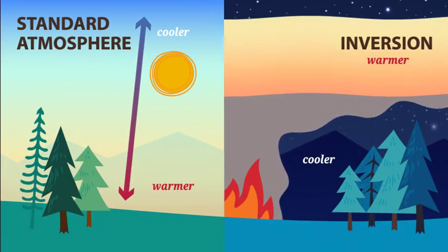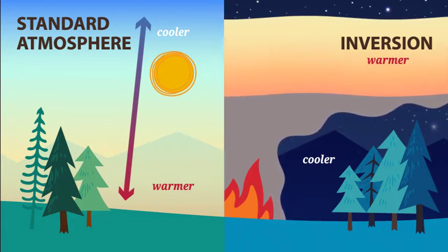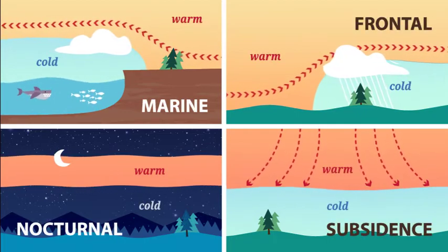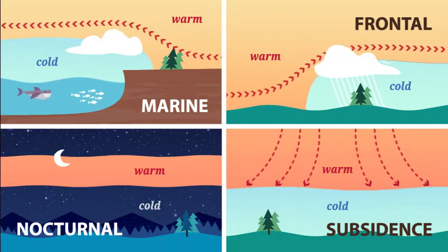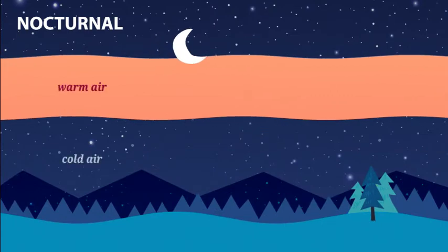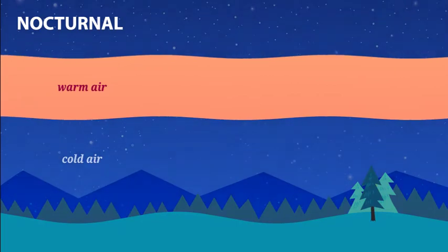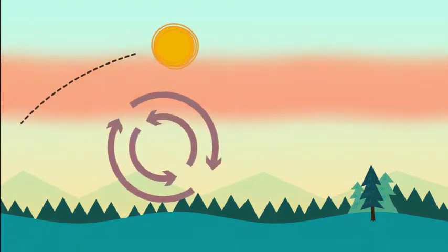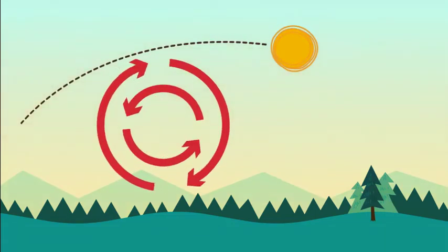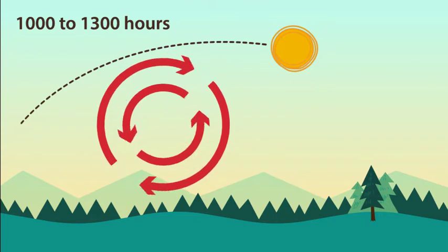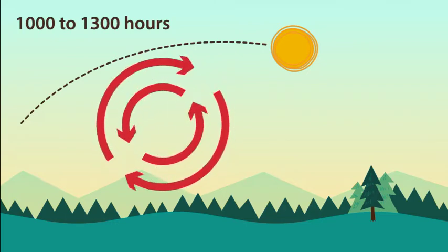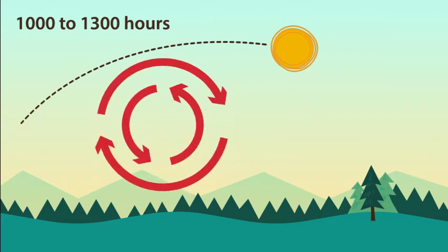Inversions represent a layer of air where temperature increases with height, creating very stable air — smoke does not want to rise through an inversion. There are several types including marine, frontal, nocturnal, and subsidence inversions. The most common is the nocturnal inversion, present most mornings, which forms at night when cold air settles on the surface leaving warmer air above. As the ground warms with increasing sunshine in the morning, eventually the cold stable air breaks. This generally occurs between 1,100 to 1,300 hours. A very hot fire can break the inversion sooner, while a dense smoke layer can allow it to linger.